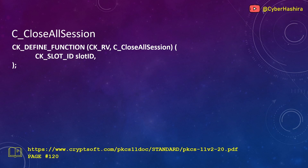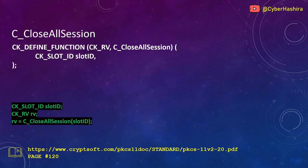C_CloseAllSessions closes all active sessions on a token. This is useful when an application has opened too many sessions and cannot track them all. You can read about it on page 120. It takes only one argument — the slot ID of the slot from which you want to close all sessions — and returns CKRV.